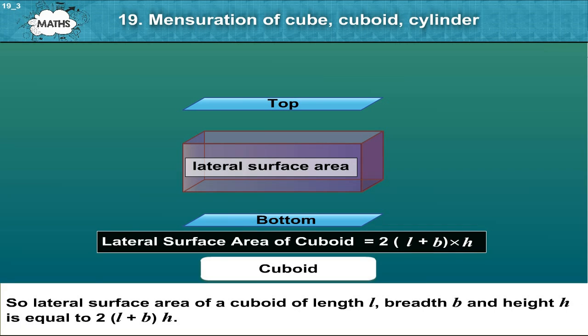So lateral surface area of cuboid of length l, breadth b, and height h is equal to 2 into length plus breadth into height.